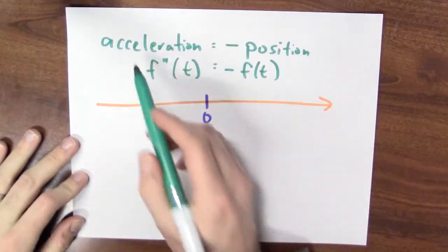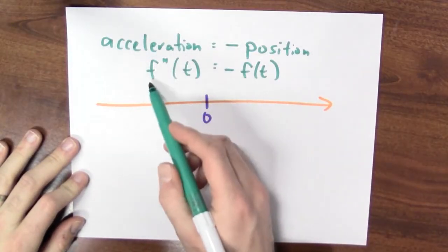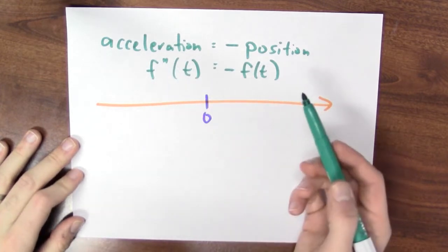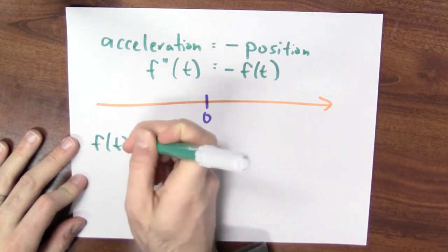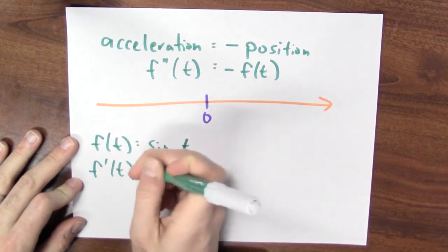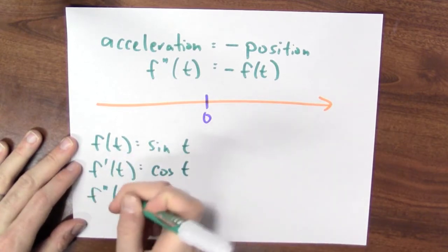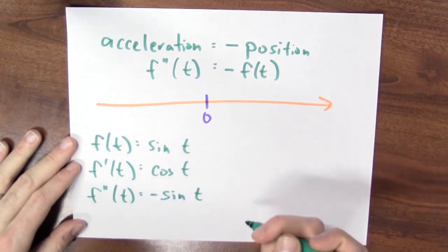There's a function also that realizes this model. To say that acceleration is negative position is to say the second derivative of my position, which is my acceleration, is negative my function. And we know an example. If f is sine of t, then the derivative of sine is cosine, and the derivative of cosine, which is the second derivative of sine, is minus sine of t.